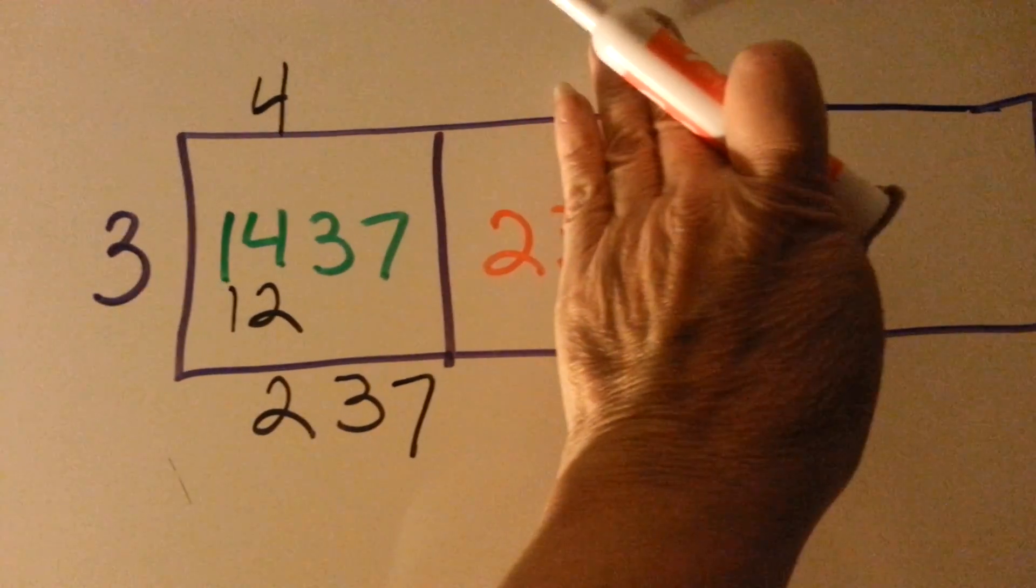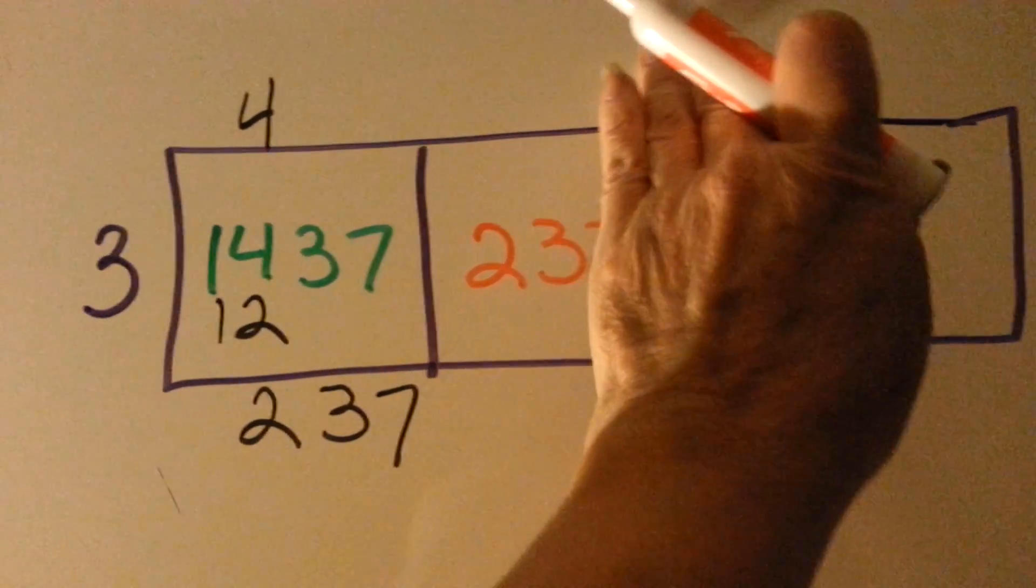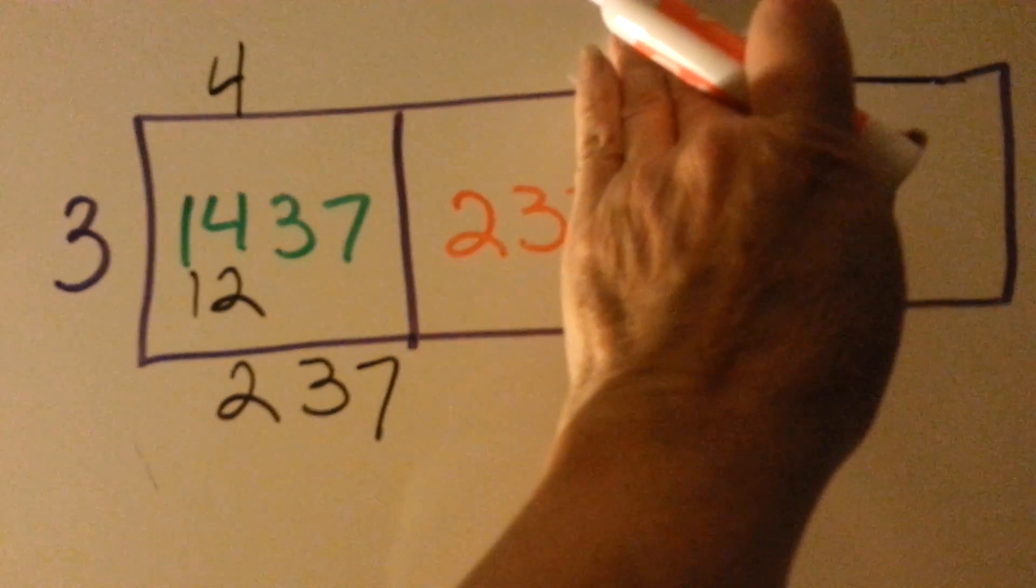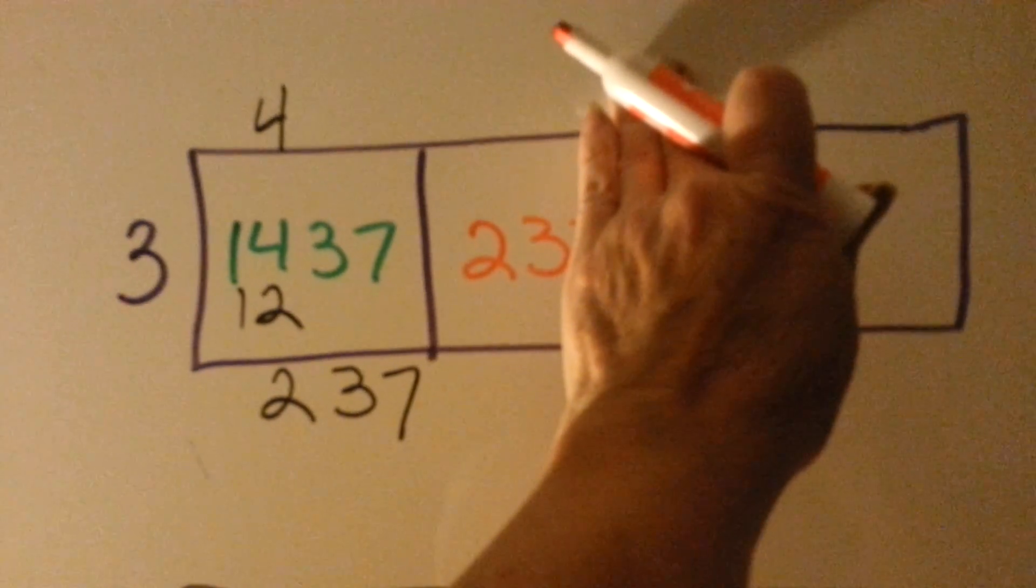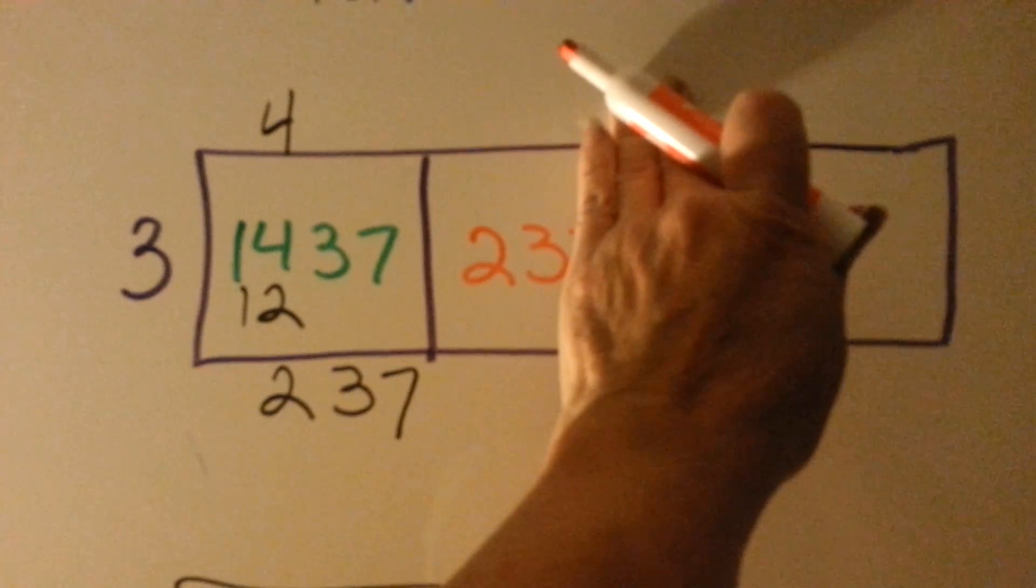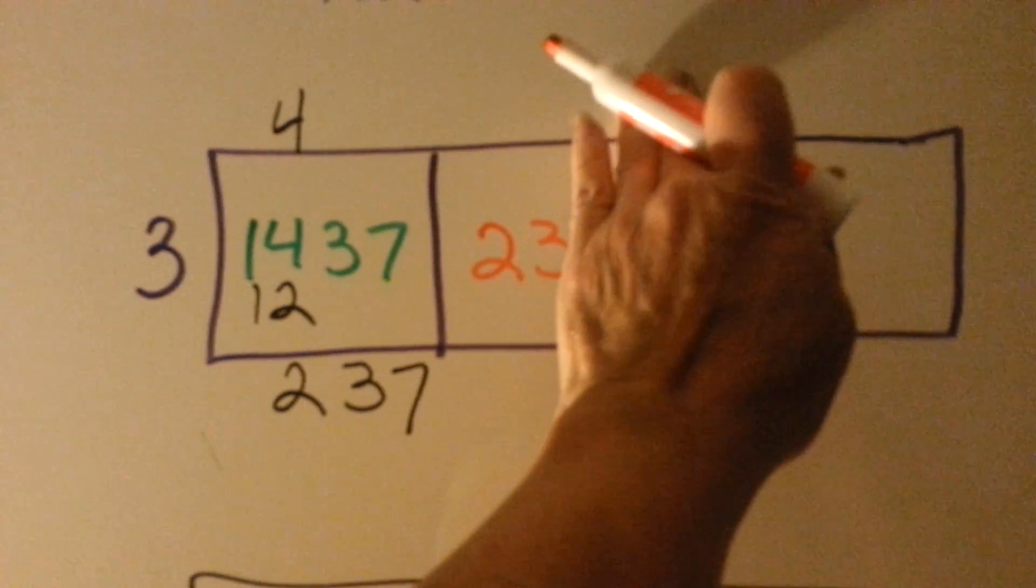And we ask ourselves, can 3 go into 2? No. Can 3 go into 23? Yes. How many times? Well, we know 3 times 8 is 24. That's too big. So we'll have to do 3 times 7, because that'll fit.